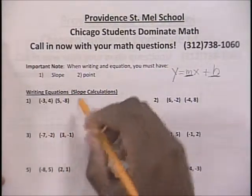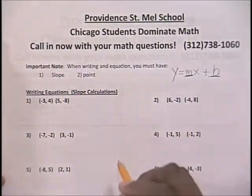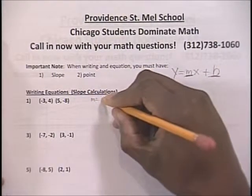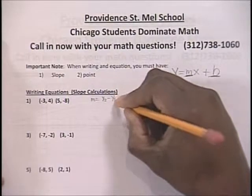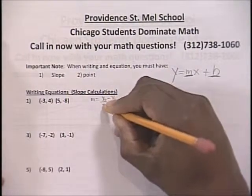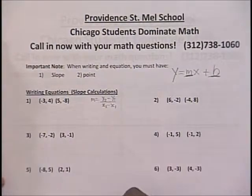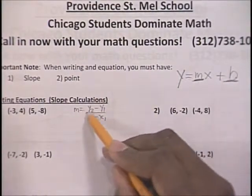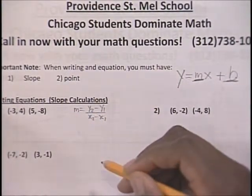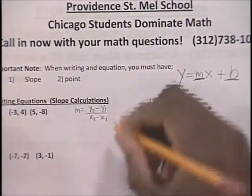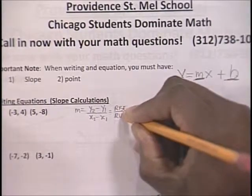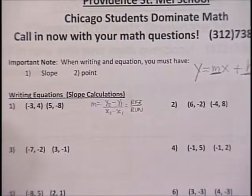The slope formula is: slope is equal to y2 minus y1 over x2 minus x1. Another way to think about slope is rise over run — how far you're going up over how far you're going over.